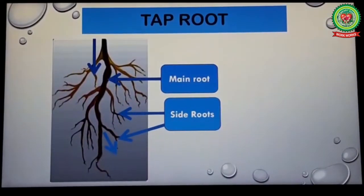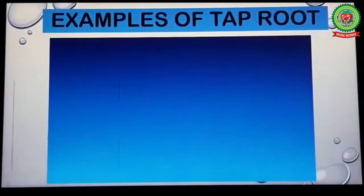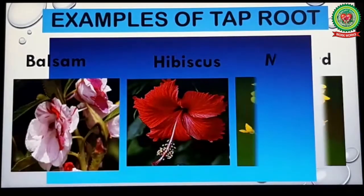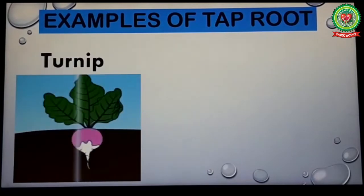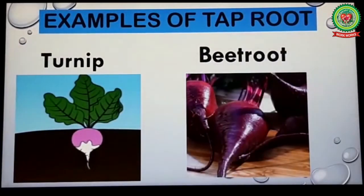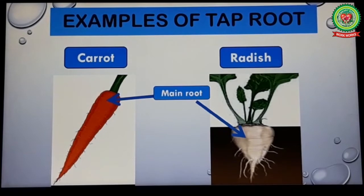Now next paragraph. Peas, beans, balsam, mustard, turnip, carrot, radish, and hibiscus are some examples of plants which have taproot. Students, these plants have one main root with thinner roots growing from the main root.